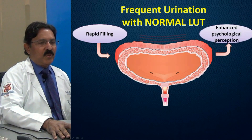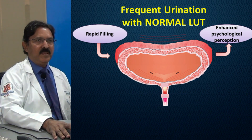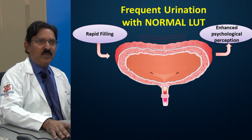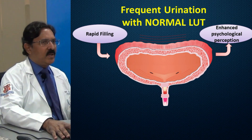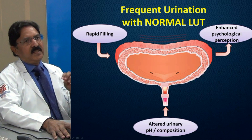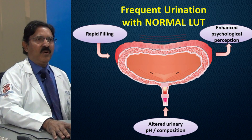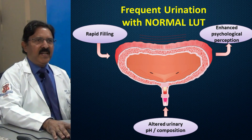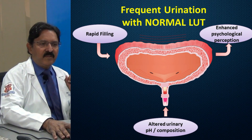Secondly, some people because of their psychological makeup have enhanced perception of urinary bladder filling and tend to pass urine too often — there is no pathology in the lower urinary tract but psychology causes them to void too frequently. Finally, sometimes a change in the pH of the urine or a transient change in the composition of urine can irritate the normal urothelium, and the patient can have a short-lasting increase in frequency.